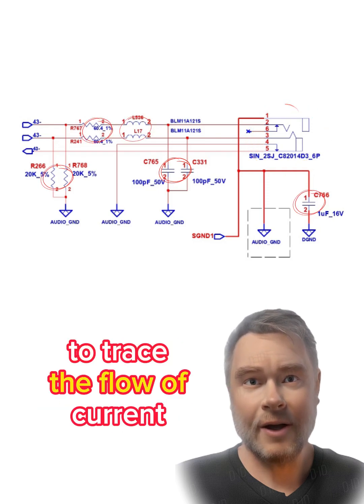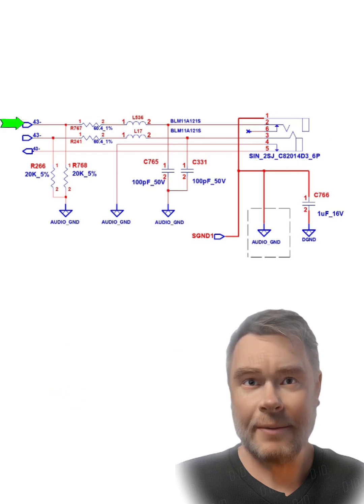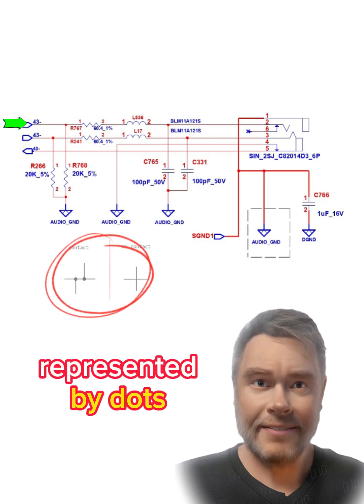To trace the flow of current, follow the wires. Wires are represented by lines, and connections are represented by dots.